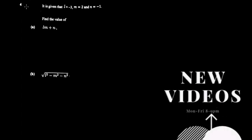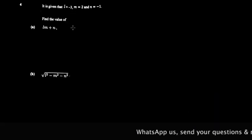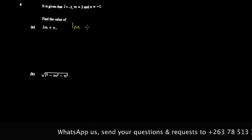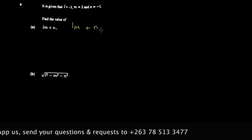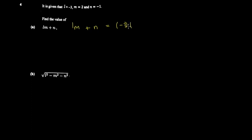Welcome back. Today we're going to continue from question four, which is on substitution. We're supposed to substitute these values and find the equivalent. Whenever you're substituting, our best advice is to always use brackets — even when it's obvious, it's just good practice. For example, when substituting l, I'll put brackets and put negative three here, and when substituting m I'll put its value, then plus n which is negative one.